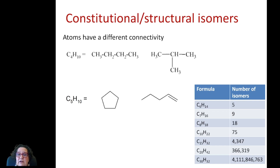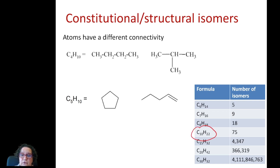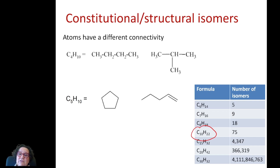If you have 7 carbons and 16 hydrogens, you can have 9 isomers. And if you have 10 carbons and 22 hydrogens, you could arrange those atoms in 75 different ways — you can have 75 isomers.